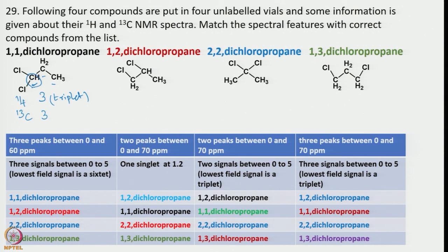Now we move on to 1,2-dichloropropane. Again, 3 signals are there in both 1H and 13C NMR. The lowest field signal is coupled equally with two adjacent protons, resulting in 6 lines.